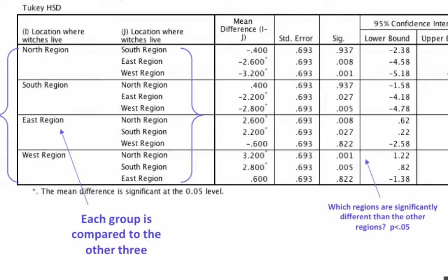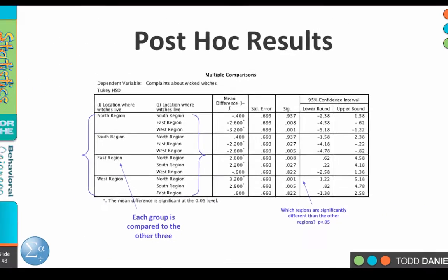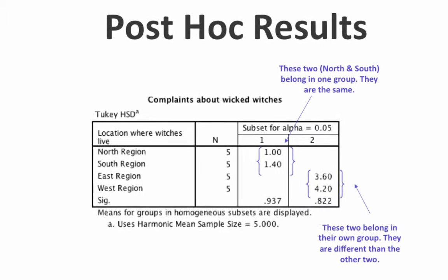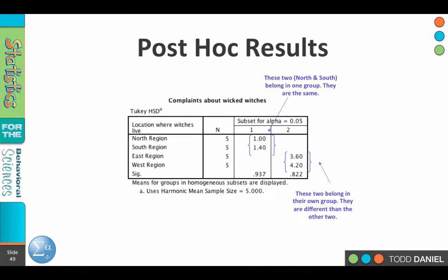This shows us that we really have two groupings: north and south are not different from each other, but they are collectively different from east and west. East and west are the same as each other, but different from north and south. Below the multiple comparisons table, we find homogeneous subsets that make this clearer. Subset one includes north and south — they are the same. Subset two includes east and west — they are the same. But north and south are different from east and west.